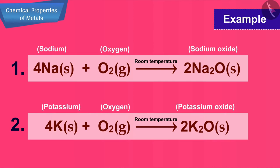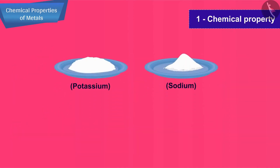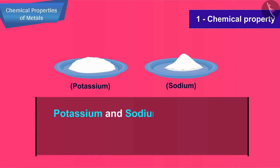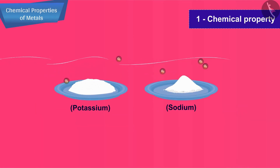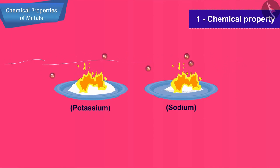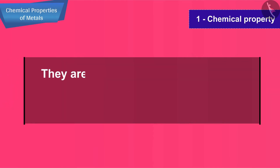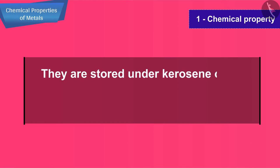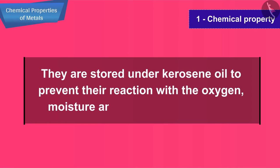There is also an interesting fact about these metals. Potassium and sodium are so reactive that they react vigorously with oxygen present in air. They catch fire and start burning when kept open in the air, and this is the reason why they are stored under kerosene oil to prevent their reaction with the oxygen, moisture and carbon dioxide of air.